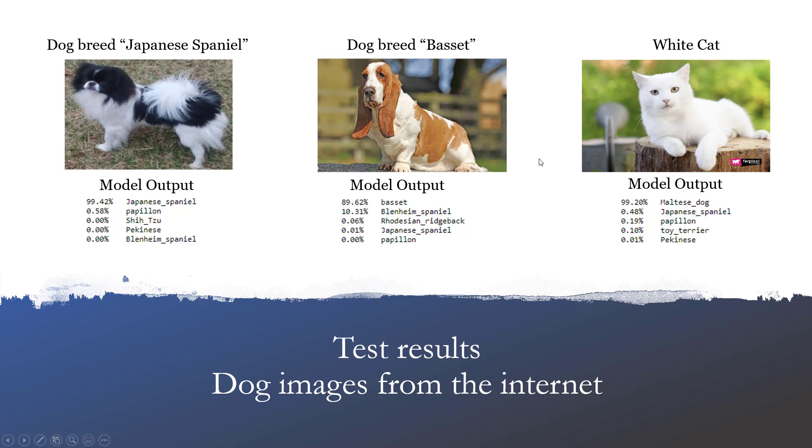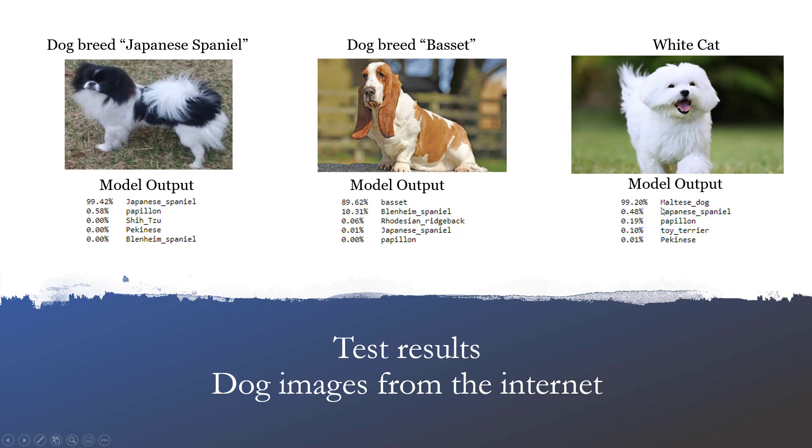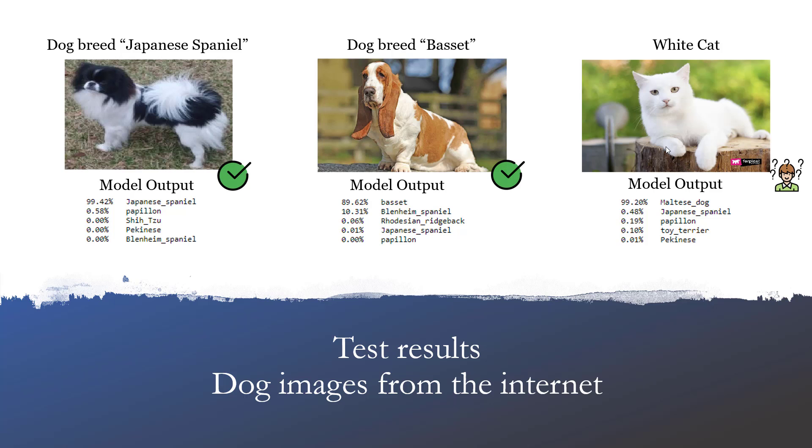For the third example, I thought, why not play around with the model a little bit and input a white cat. Of course, our training data did not have cats at all, and that's why it cannot predict it as a cat. It will try to predict the cat as a dog which looks as similar to that cat as it can. And it turns out, yes, it does, because the Maltese dog is white in color - that vibrant, shiny white. So essentially, the model was correct in whatever training data it had.